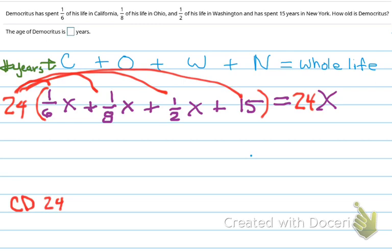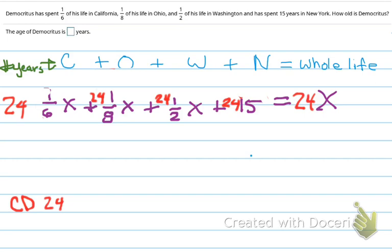It goes, it goes, it goes. So that 24, that goes into the one sixth X. And that 24 goes into the eighth. And that 24 goes to the half. And that 24 goes into the fifteenth. And then that 24 goes into the X.